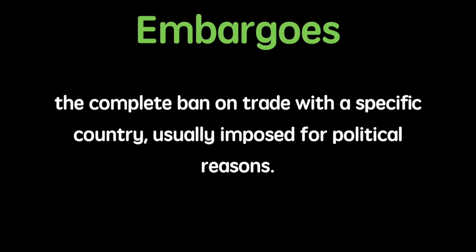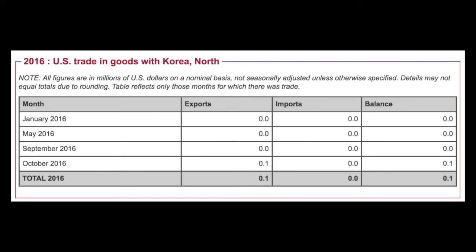Embargoes are the complete ban on trade with a specific country, usually imposed for political reasons. The United States has a near total embargo on trade with North Korea. If anyone can figure out what that 0.1 represents, I'd be happy to find out.